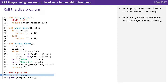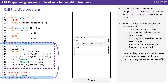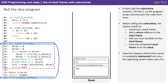In this program, the code starts at the bottom of the code listing — in this case line 23, where we import the Python random library. It then calls the subroutine Output Throw, so the program jumps and executes the code from there. But before calling the subroutine, the system needs to construct a stack frame, add a return address to the stack frame, add any local variables to the stack frame, and then push the completed stack frame onto the stack.